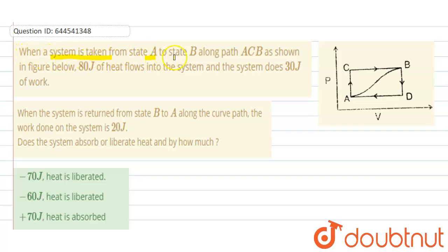When a system is taken from state A to state B along path ACB as shown in the figure, 80 joules of heat flows into the system and the system does 30 joules of work. When the system